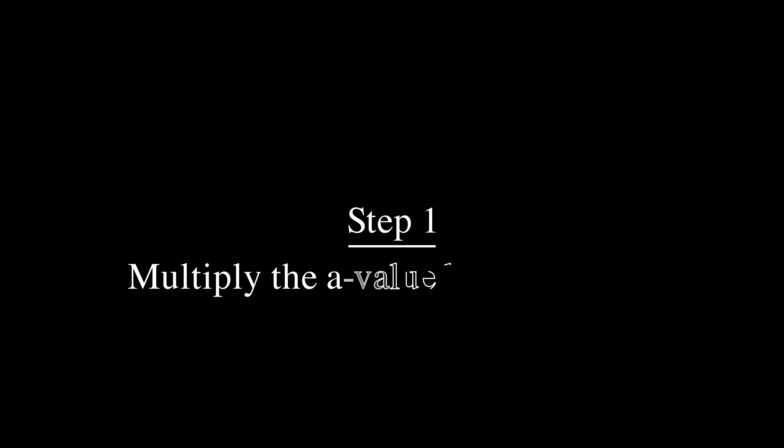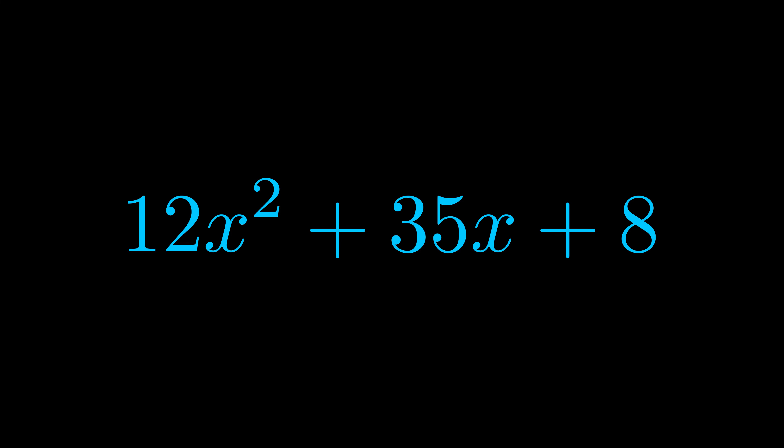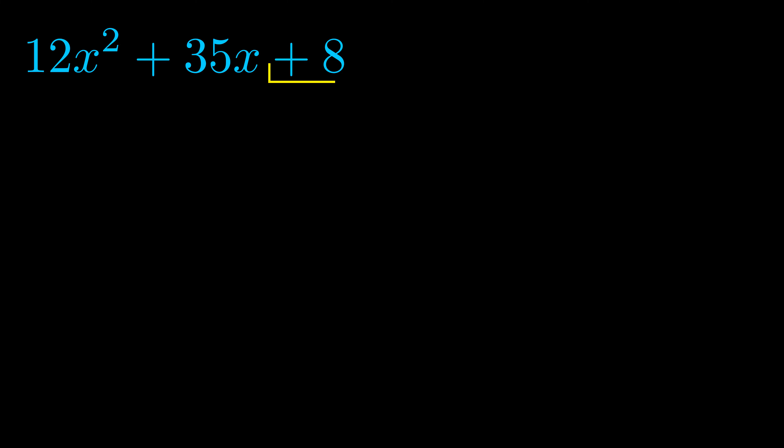Step one when factoring an equation of this form is to multiply the a value by the c value. Here we can see that our a value is the coefficient on the x squared term and our c value is the constant term.